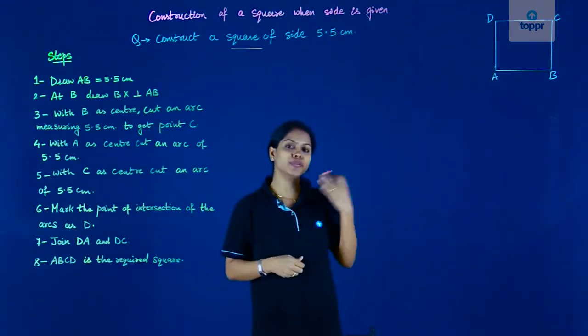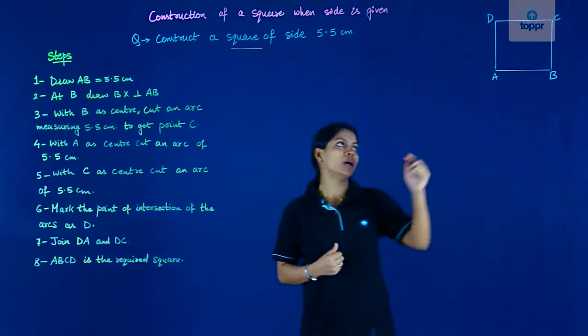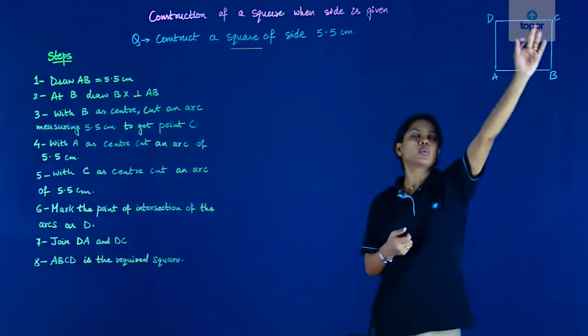Let's just draw a rough diagram before we discuss how to go about the construction. I have named the square as ABCD.